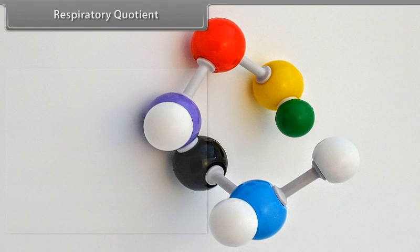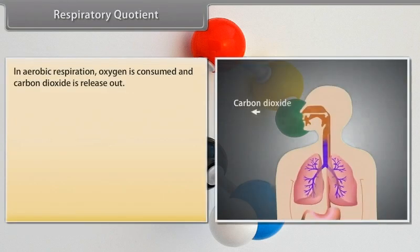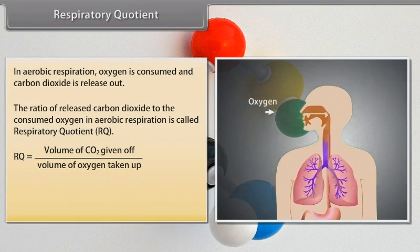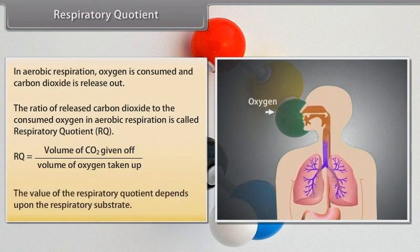The respiratory quotient: in aerobic respiration, oxygen is consumed and carbon dioxide is released. The ratio of released carbon dioxide to the consumed oxygen in aerobic respiration is called the respiratory quotient (RQ). RQ equals volume of CO₂ given off divided by volume of O₂ taken up. The value of the respiratory quotient depends upon the respiratory substrate.